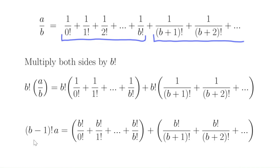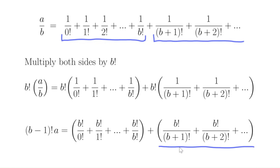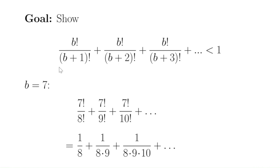So we have: an integer equals an integer plus the remaining tail of the series. What we're going to show is that this tail is positive but strictly less than 1 — so it won't be an integer. That will be our contradiction: an integer equals an integer plus something strictly between 0 and 1, which is not an integer. The one thing we have left to show is that this tail is less than 1, no matter what positive integer b is.